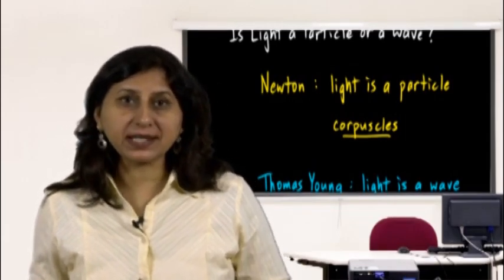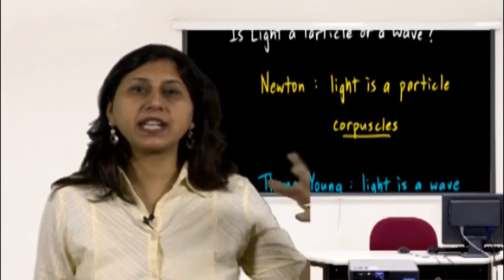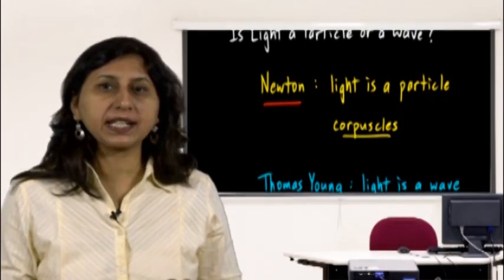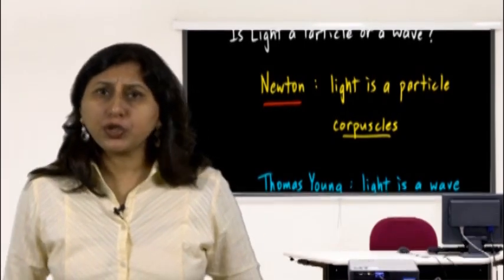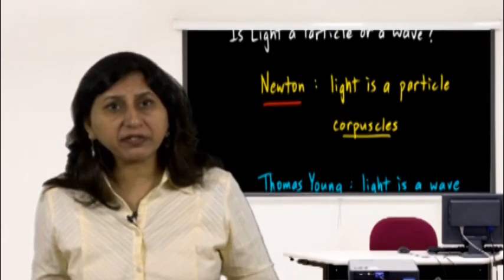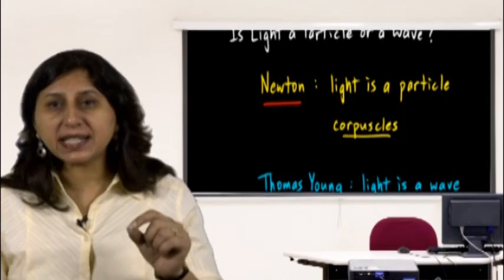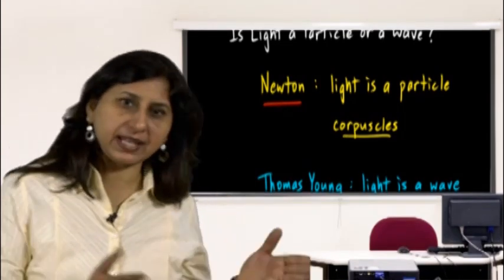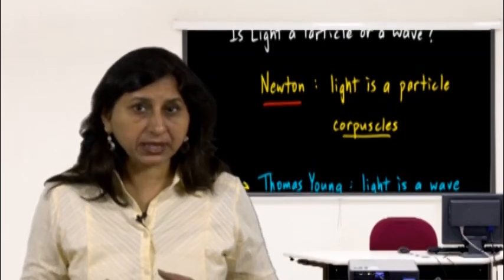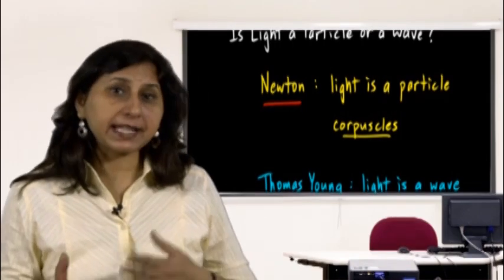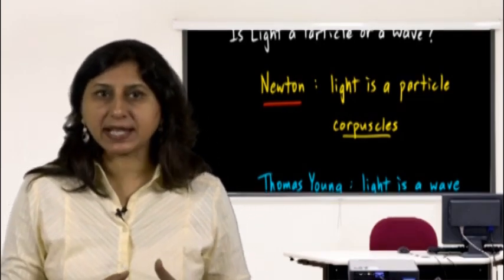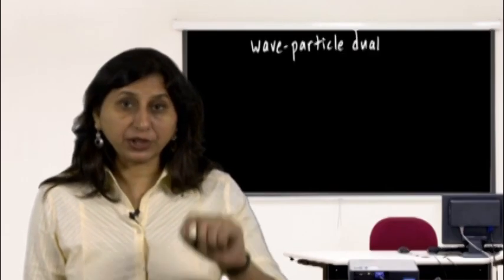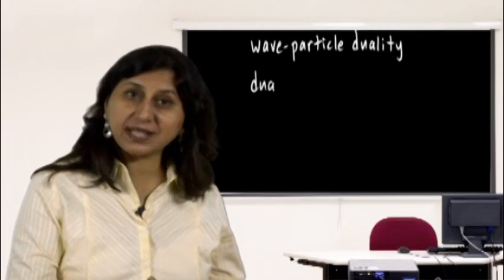The physicist who performed the photoelectric effect experiment was Albert Einstein, who called the light particle a photon and received the Nobel Prize for this work. This left the scientific community debating between wave and particle theories. Today, scientists recognize that light simultaneously has two different natures — it behaves as both a particle and a wave. This is called wave-particle duality, or the dual nature of light.